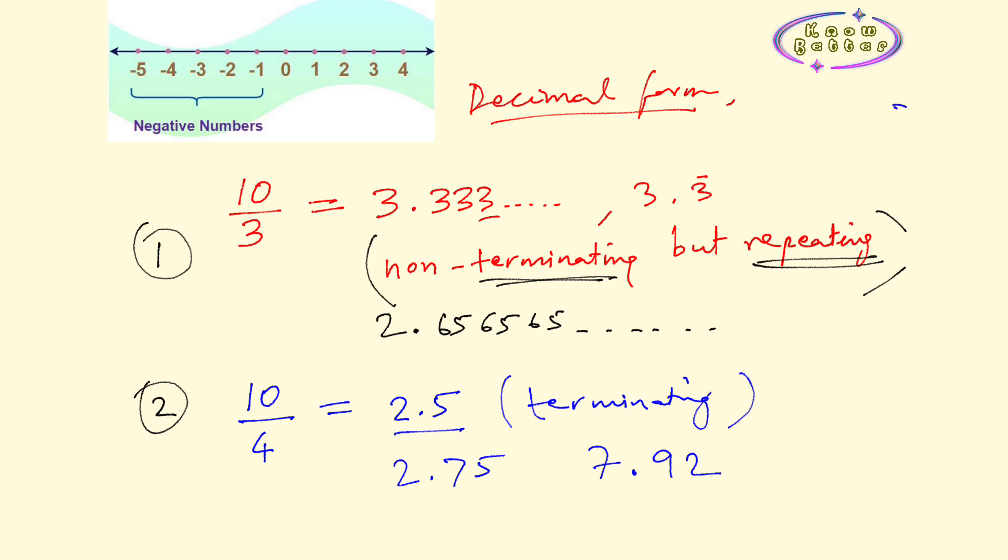So after that we don't need any number to be written. This is called terminating decimal. So a rational number can be written in a way which turns out to be either non-terminating but repeating or just terminating. Only 2 ways are possible and if you find any decimal number written in these two forms we call it a rational number.